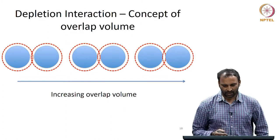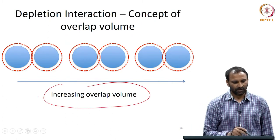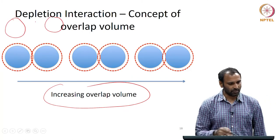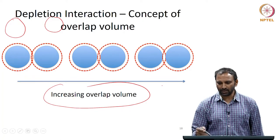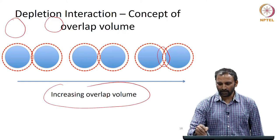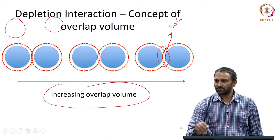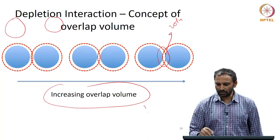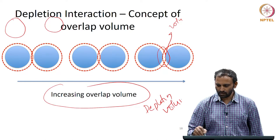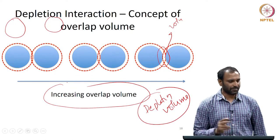This schematic shows the depletion volume. If the particles are far apart, the depletion volume is 0. As soon as overlap occurs, you get a lens-like region in the case of spherical particles. The volume of this lens is called the depletion volume, and it depends on the separation distance.